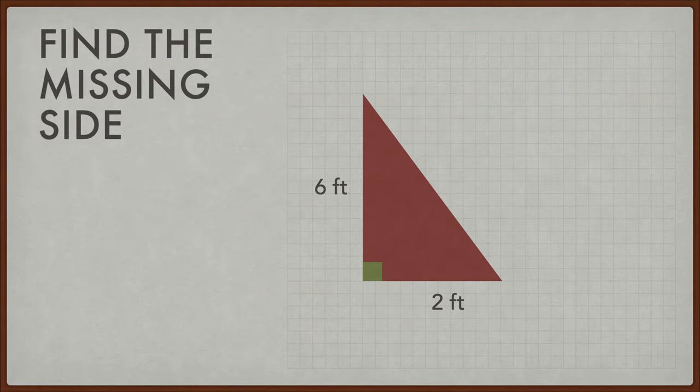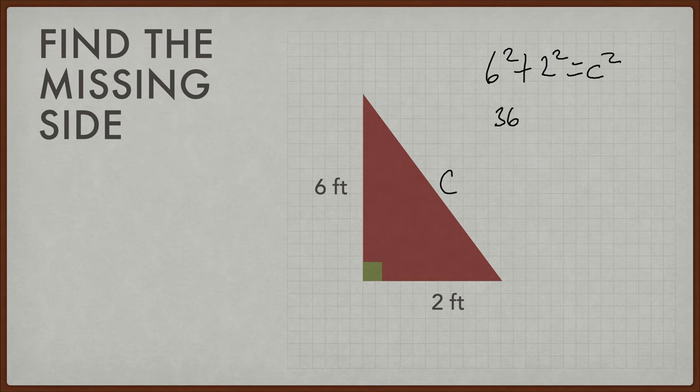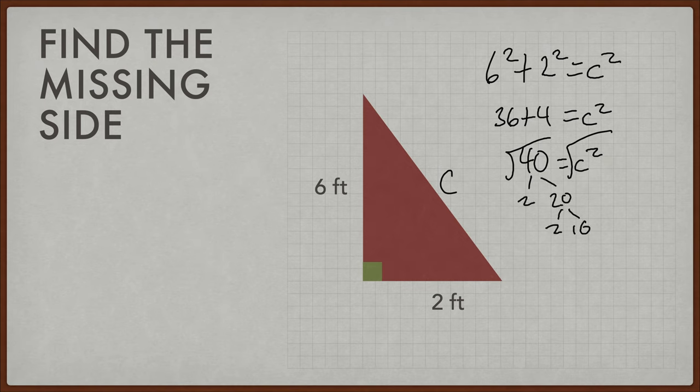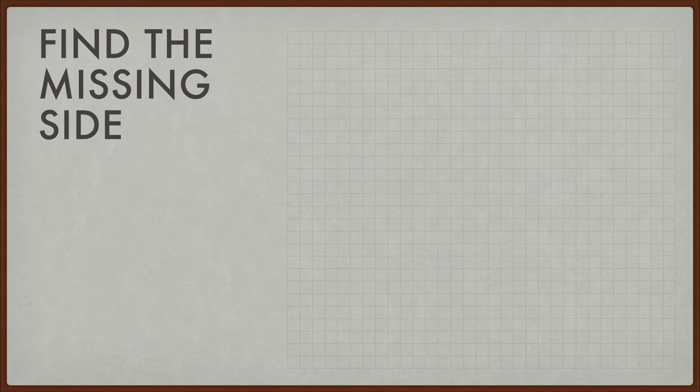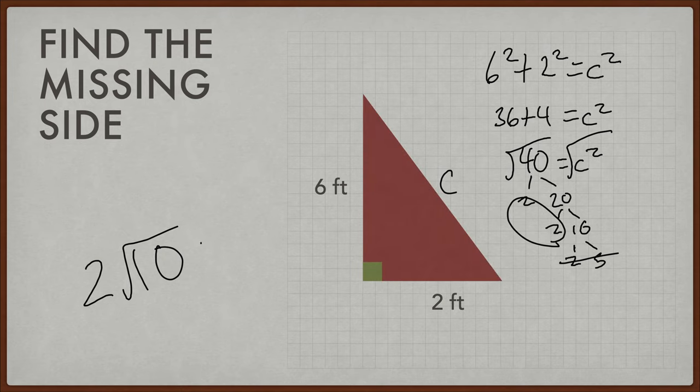So we're going to start actually by finding the missing side, just doing a bit more Pythagorean theorem like we did last video. So I'm going to say, let's see, so that's 6 squared plus 2 squared equals c squared. So 36 plus 4 equals c squared, that's 40, and then we have to square root it. So we have to simplify, so that's 2 times 20, which is 2 times 10, which is 2 times 5. We have a pair of 2s, which means it is 2 square roots of 10, because it is 2 square roots of, and then we have the 2 times 5, which is still 10. So 2 square roots of 10 is our side length there.